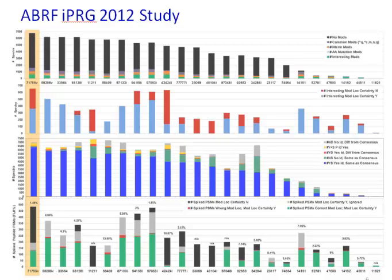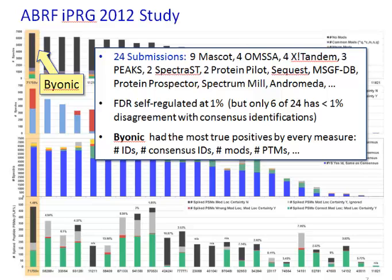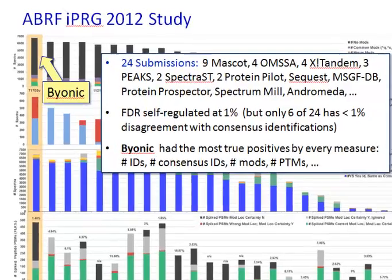Here is the poster of results published by the IPRG committee. There were 24 submissions. Everyone was supposed to send in a list that had 1% false discovery rate as measured by the target-decoy approach. But only six of the 24 had less than 1% disagreement with consensus identifications, which is an independent way of checking false discovery rate. Here we see Byonic on the left, and it had the most true positives by every measure.